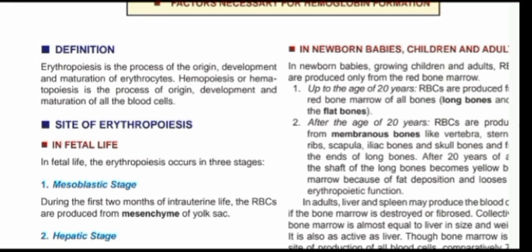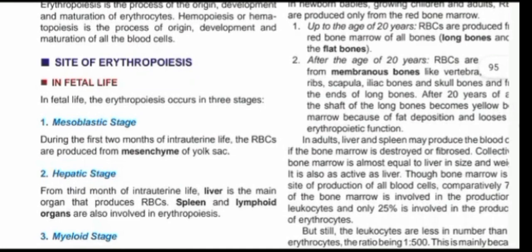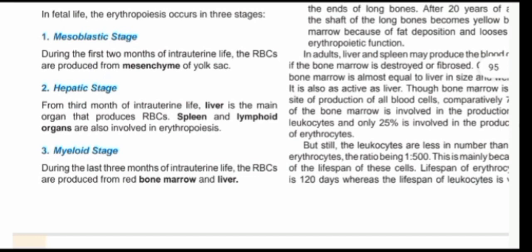There are certain sites you must know. In fetal life, you have the mesoblastic stage, where this process occurs in the mesenchyme of the yolk sac when the placenta is not yet developed. Then the hepatic stage, whereby red blood cells are produced in the lymph nodes, spleen, and liver. The myeloid stage is when red blood cells are actually produced in the bone marrow, including the liver.